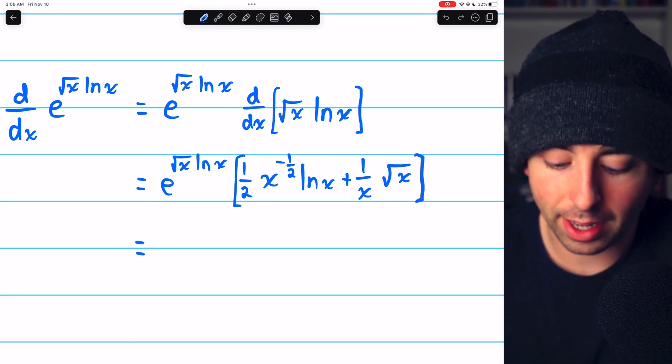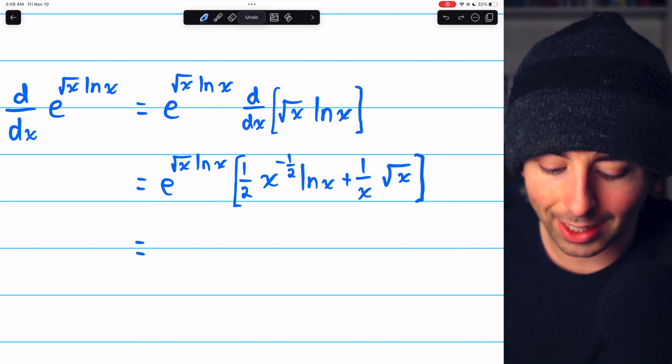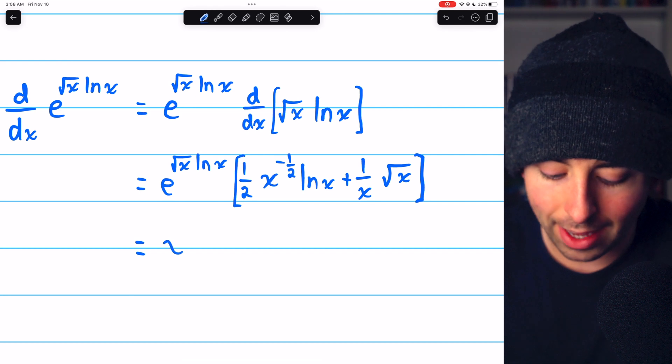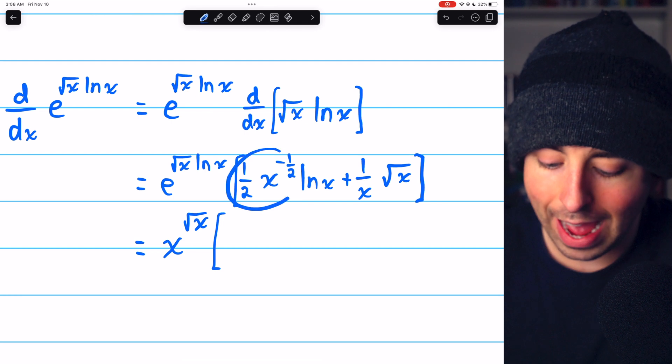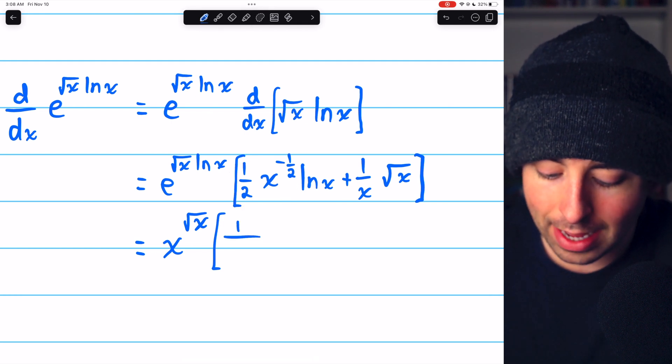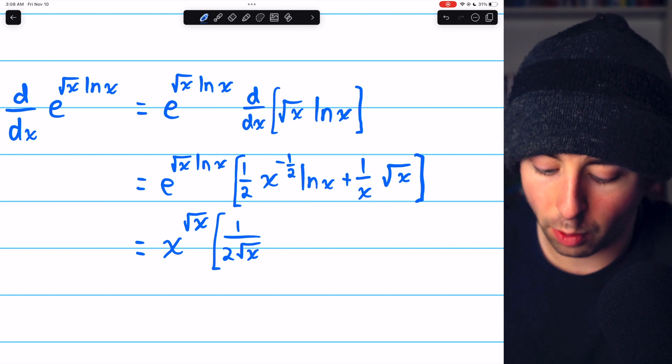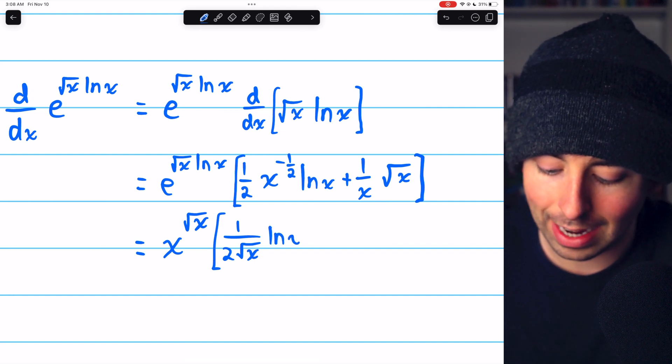Then we can simplify things. e to the root x ln x is the same as x to the root x. In brackets, one half x to the negative half is the same as one over two root x. This is getting multiplied by the natural log of x.